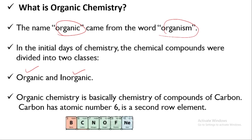Carbon compounds from living sources are organic. For example, natural gases such as methane, ethane, propane, and butane, as well as pentane, hexane, and heptane — which belong to petroleum — are all organic compounds. They all belong to the living source and are organic.